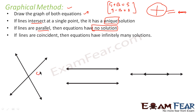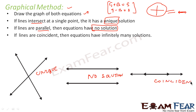Let me write this again: intersecting lines give a unique solution. As I explained, the solution is nothing but the point where both lines meet. If these two lines meet at only one point, we can say the system has a unique solution.